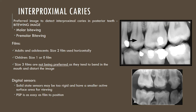Digital sensors — solid state sensors — may be too rigid and have a smaller active surface area for viewing, so placing them for bitwing radiographs may sometimes limit the visible area. A PSP, which is more similar to a film, is as easy to position as a film and is a more preferred choice for viewing interproximal caries on a bitwing. The images shown here are an adult bitwing showing the molar and part of a premolar region, with a proximal lesion visible on the distal surface of the maxillary premolar, and a bitwing of a child showing the right side involving the deciduous molars.